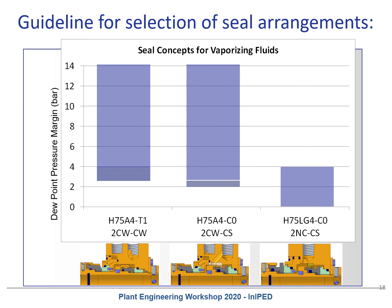This slide is a guideline for the selection of seal arrangements. Dependent on the vapor pressure margin, understanding the challenges helps in selecting the correct seal and seal support system. Without using an arrangement 3 seal pressurized with a barrier fluid in combination with piping plan 53, 54, or 74, there are three seal concepts for vaporizing fluids, given as seal configuration 2CW-CW — two wet lubricated seals in succession.